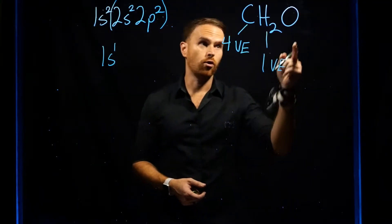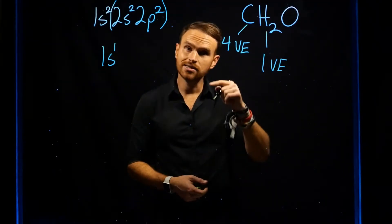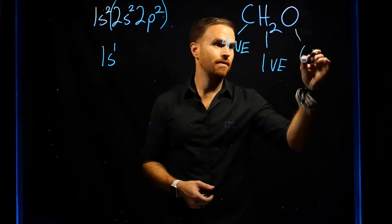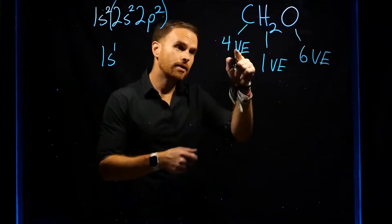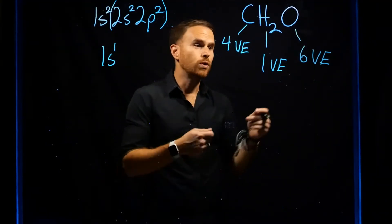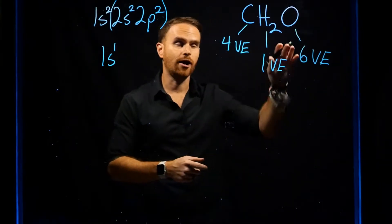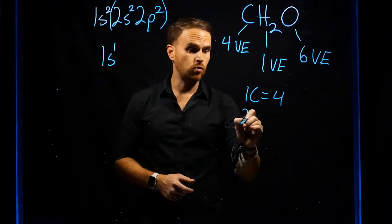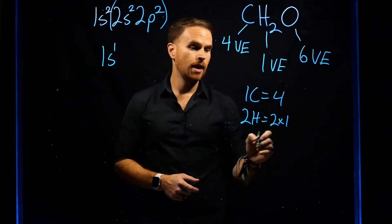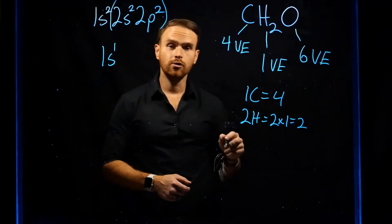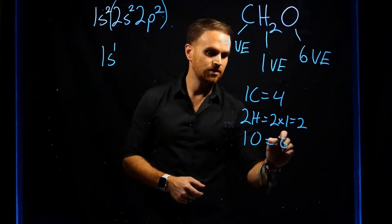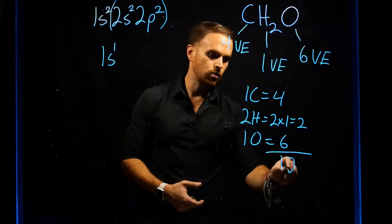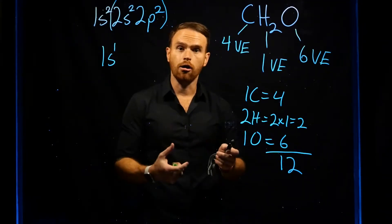If you look for oxygen, you see that it's the eighth element on the periodic table, or the sixth element on the second row, which means that oxygen has six valence electrons. Now that we know individually for each atom how many valence electrons there are, we can figure out the total for this entire molecule. One carbon gives four valence electrons; two hydrogens gives 2 × 1 = 2; and one oxygen gives six. Taking the sum: 4 + 2 + 6 = 12 valence electrons with which to create our Lewis structure.